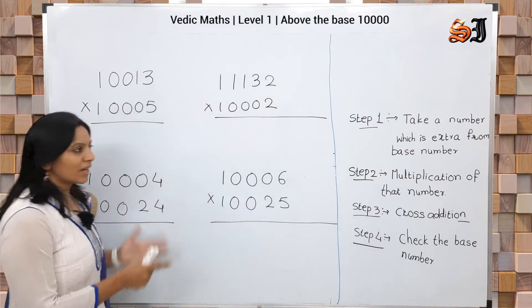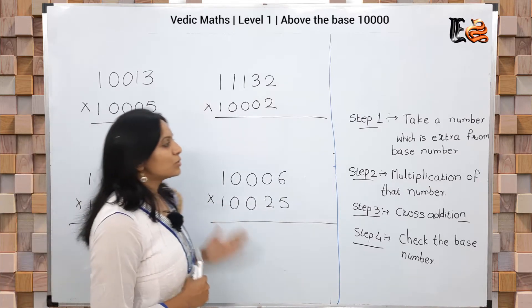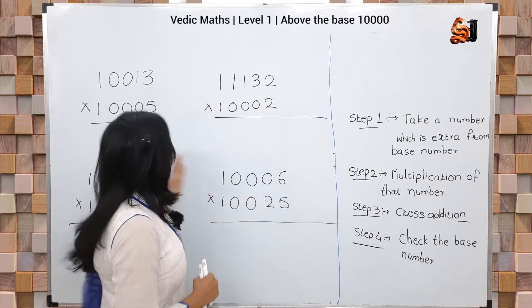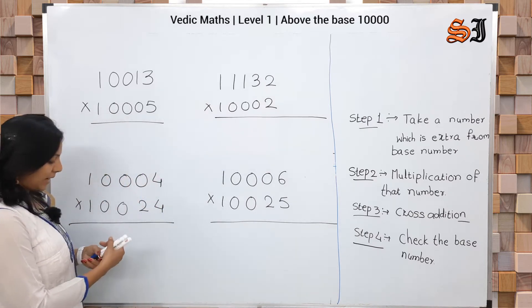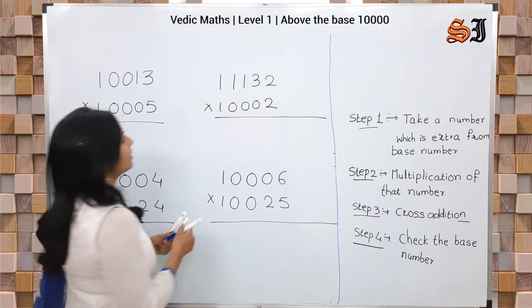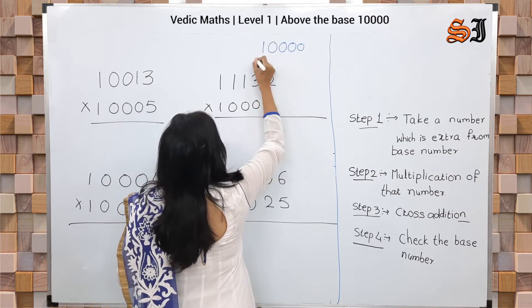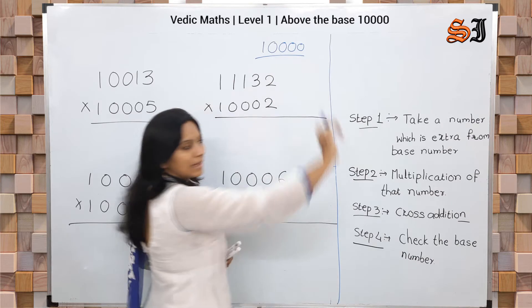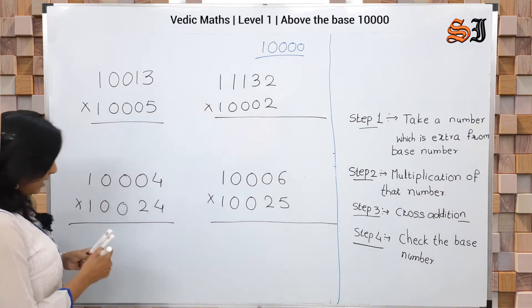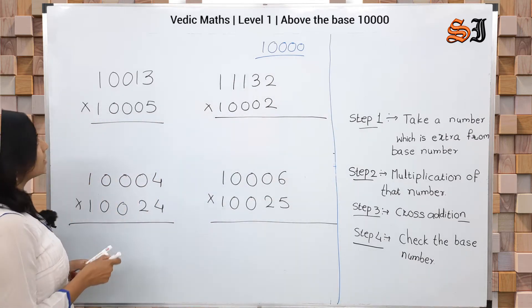We have to apply the same rules here. The base 10,000 is 1, 0, 0, 0, 0 - that's 10,000. Okay? Above the base 10,000.